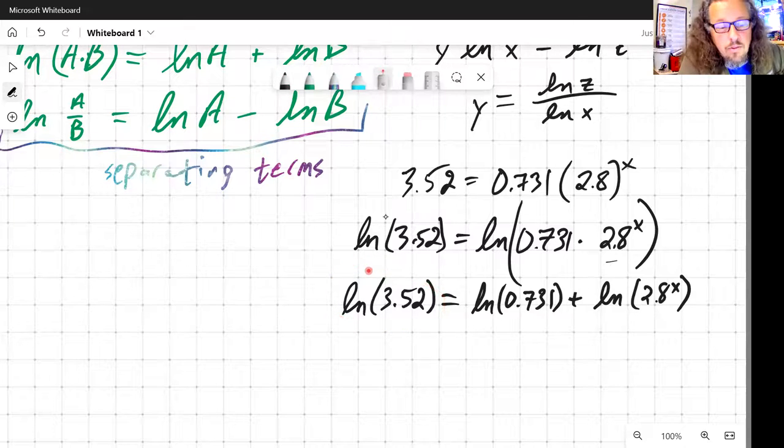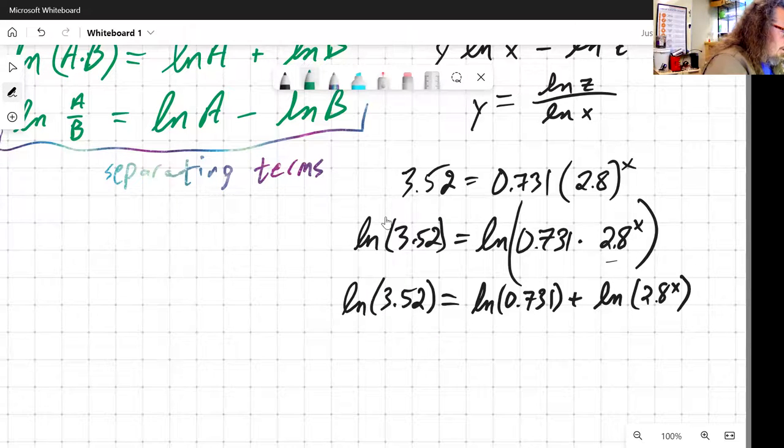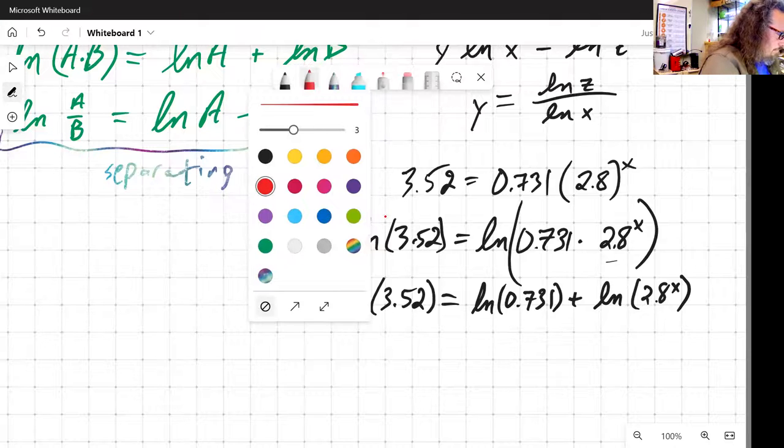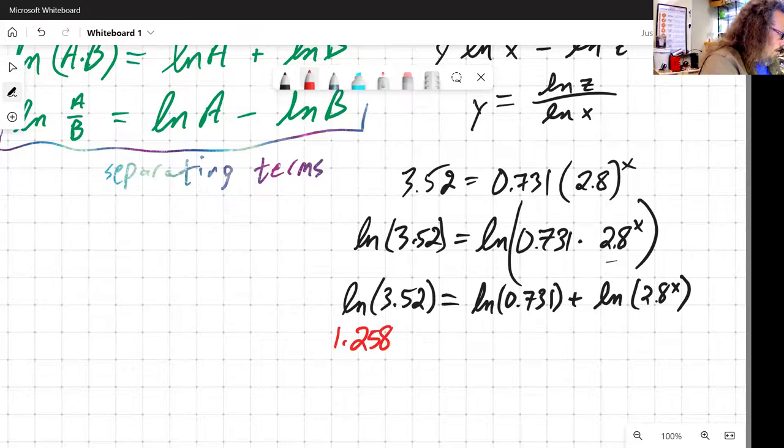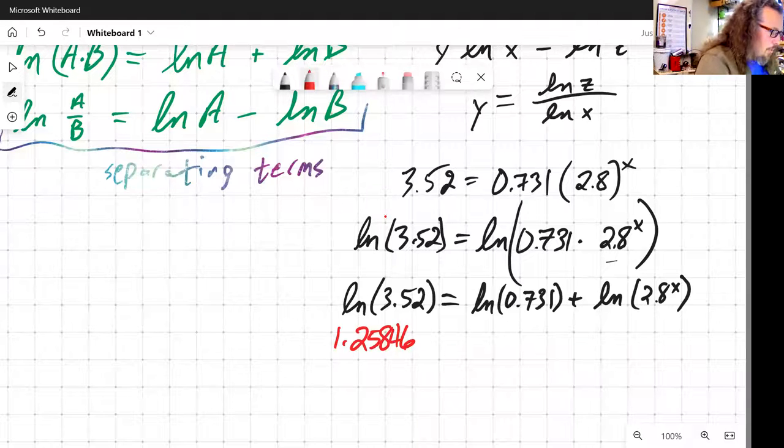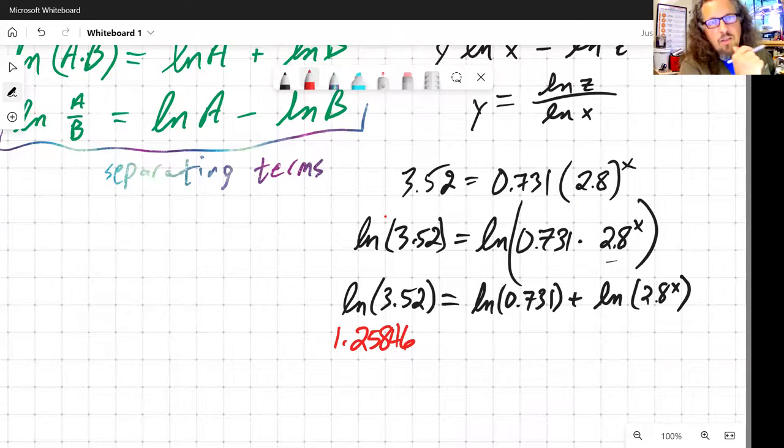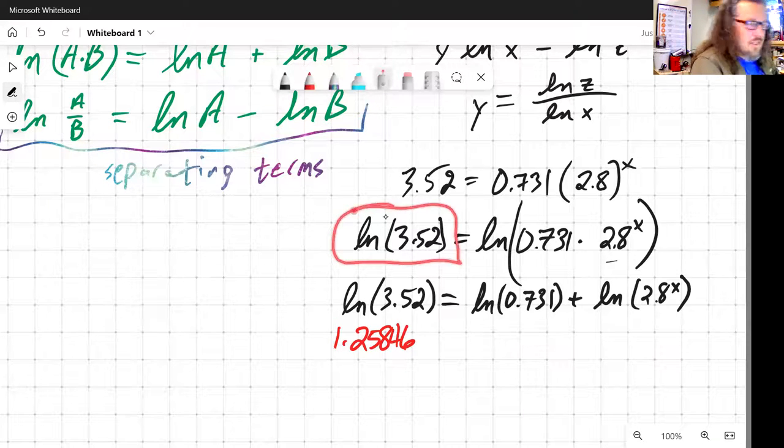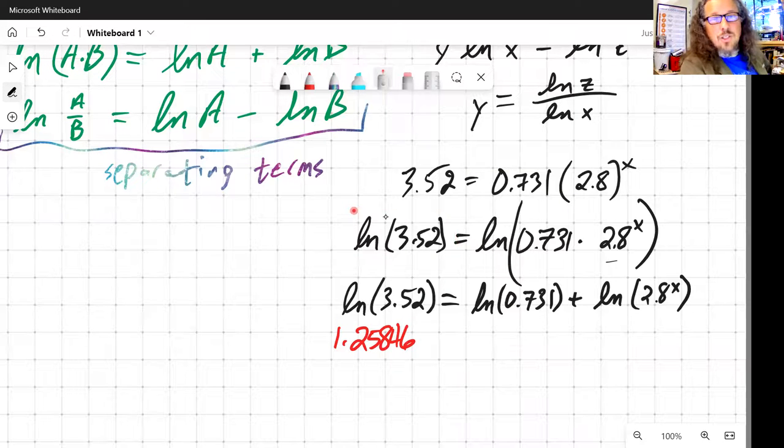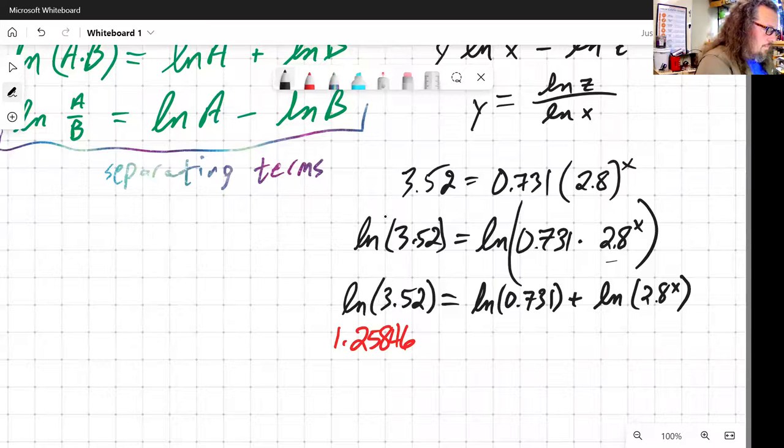Now, before I go any further, an important thing to just get locked into your head: that is just a number. You know that I can evaluate anytime I want. Pull up my cheap little calculator and I can evaluate that, and it just so happens that that is 1.25846. That's an important key. Just because you're taking the logarithm of a number doesn't make it into something weird or different, it just changes the value of the number.